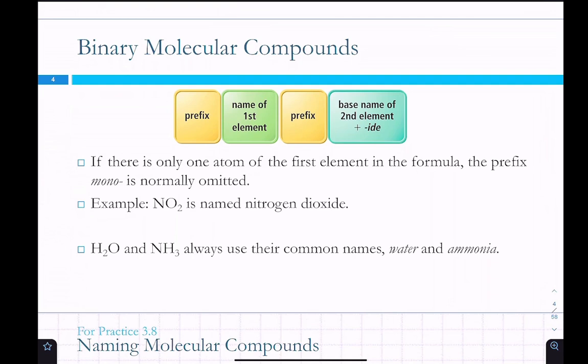It's not going to be wrong if you include mono. It usually gets dropped. So, this would not be mononitrogen dioxide. It would just be nitrogen dioxide. And then for H2O and ammonia, they always use their common names, water or ammonia, unless you're trying to scare people and then you call it dihydrogen monoxide. Tell people that it's like the number one killer.